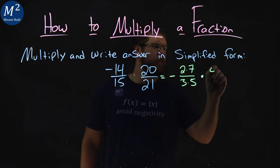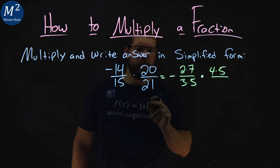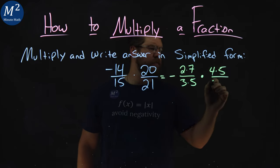20, well, that's 4 times 5. Off the bat. And 21 is 3 times 7.